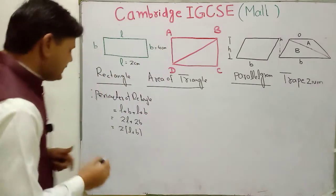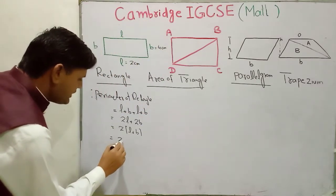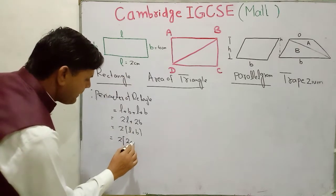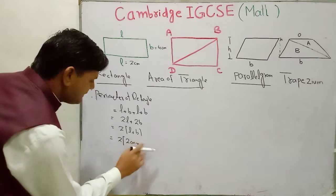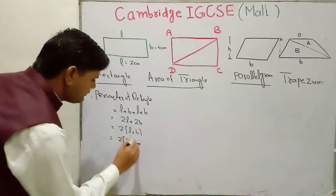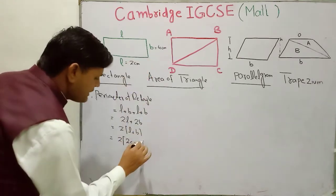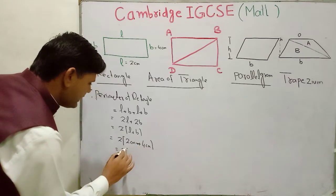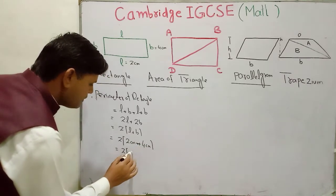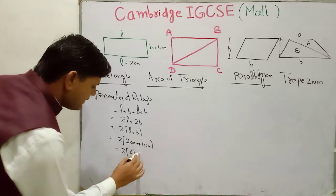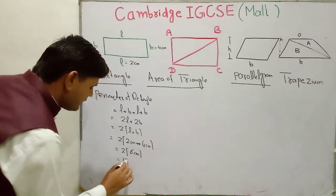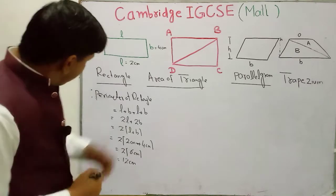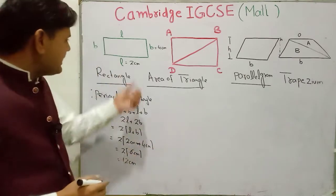You put the values in: 2 times (length 2 cm plus breadth 4 cm), so 2 times 6 centimeters. The answer will be 12 centimeters. Length is measured in centimeters.